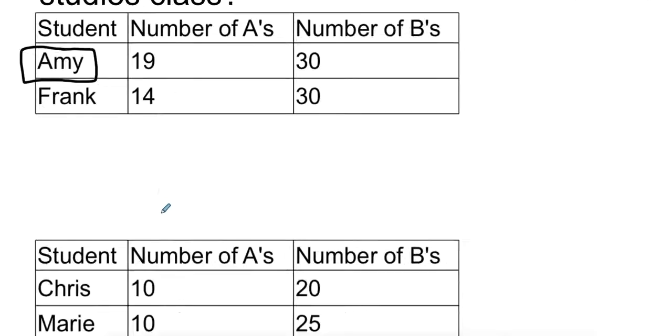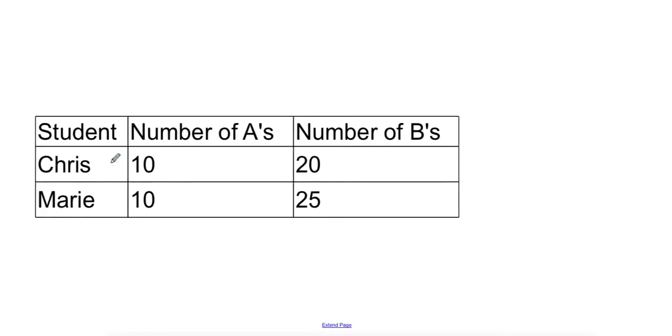Now in our next example, we can see that between Chris and Marie, they have the same number of A's, but the numbers of B's are different. Now again, they have the same number of A-level grades, but it looks like it takes Marie a few more B's to get to the same number of A-level grades that Chris does. So in this example, Chris would actually be more successful within social studies.